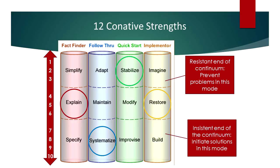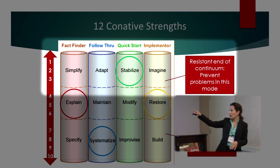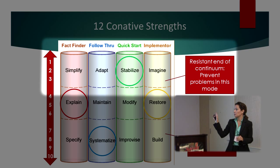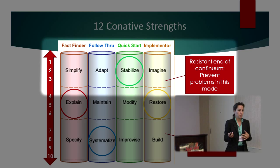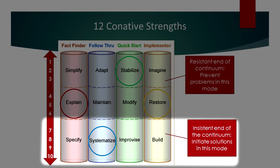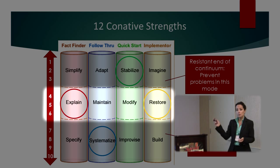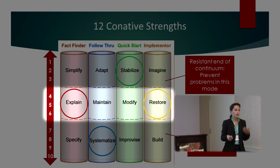This is part of why it's important to consider conation when putting together teams — people will naturally process information differently and go about approaching tasks differently. By using this information and understanding this about ourselves and each other, we can build more effective and productive teams. When we get the results of a Kolbe A, it gives you results along these four action modes, reported on a continuum from one to ten. Scores of one through three represent resistant action modes, and seven through ten represent insistent action modes. The four through six range are mediator or facilitator modes, where you're comfortable working on either end of the continuum.